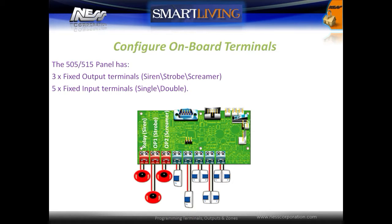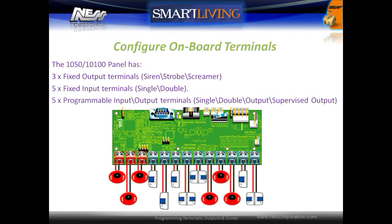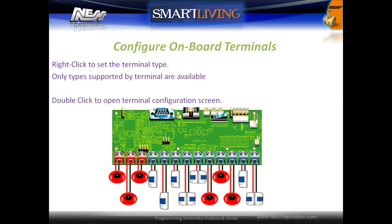The 505 and 515 panels have three fixed output terminals for siren, strobe and screamer, and five fixed input terminals that can be configured as single or double inputs. The 1050 and 10100 panels have three fixed output terminals for siren, strobe and screamer; five fixed input terminals for single and doubled zones; and five programmable input/output terminals for single, doubled zones, outputs, and supervised outputs.